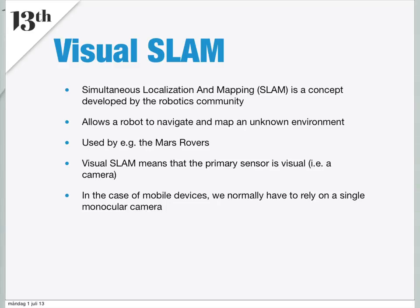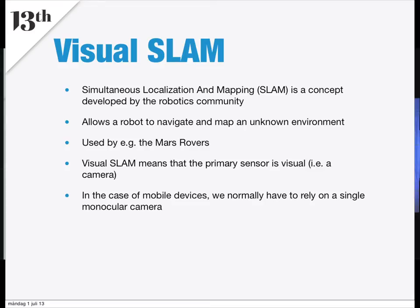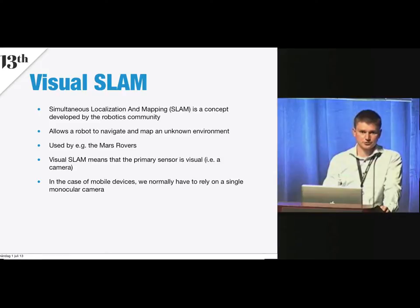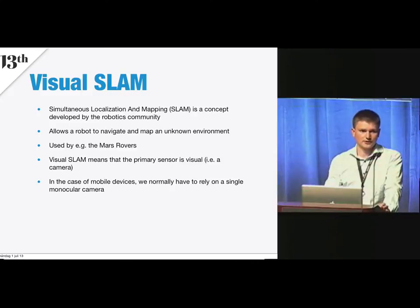So what's SLAM? Visual SLAM — SLAM stands for Simultaneous Localization and Mapping — is a concept originally developed by the bio-robotics community. The idea is to allow a robot to navigate and map an unknown environment. It's used, for example, by the Mars rovers and similar. In our case, we do visual SLAM, meaning the visual sensor is the most important sensor for navigation. On mobile devices, we normally have just a single camera, so we work with monocular vision.